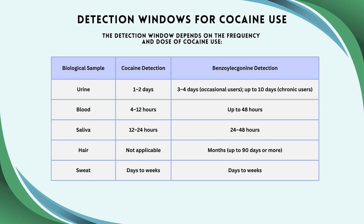To summarize detection windows: benzoylecgonine is the main metabolite detected. In urine, three to four days. In blood, up to 48 hours. In saliva, up to 48 hours. In hair, up to 90 days or more. In sweat, days to weeks.